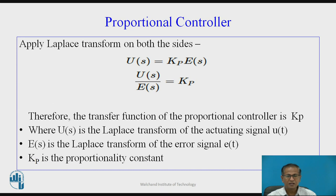So U(t) = Kp × E(t). Applying the Laplace transform on both sides: U(s) = Kp × E(s). Therefore, U(s) / E(s) = Kp, which acts as the transfer function of the proportional controller, where Kp is also called the proportionality constant. Here U(s) is the Laplace transform of the actuating signal U(t), E(s) is the Laplace transform of the error signal, and Kp is the transfer function of the proportional controller.